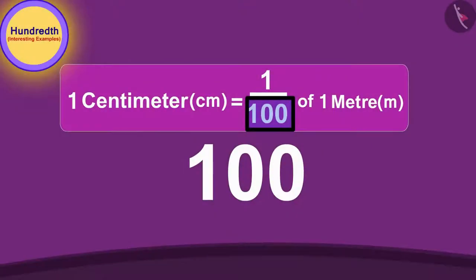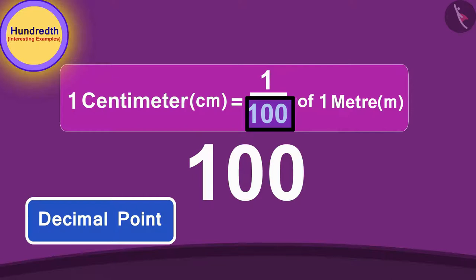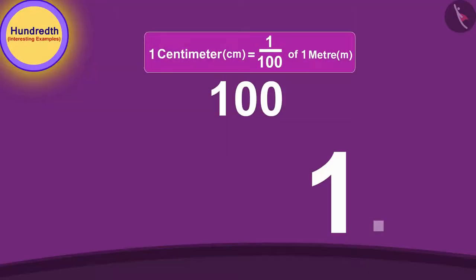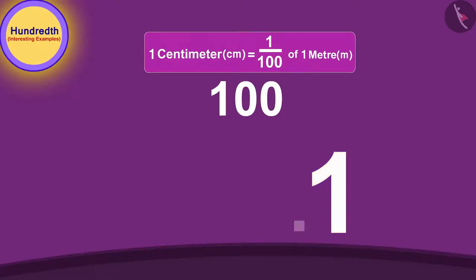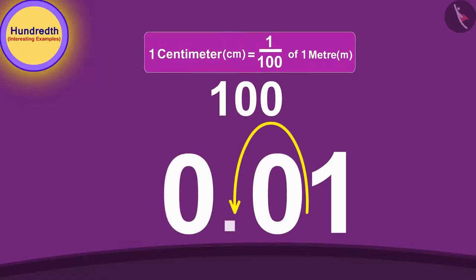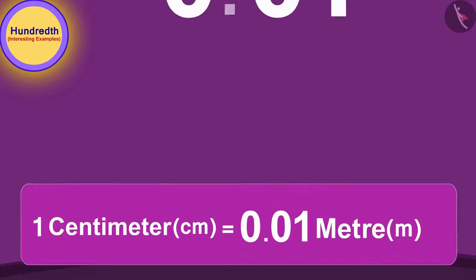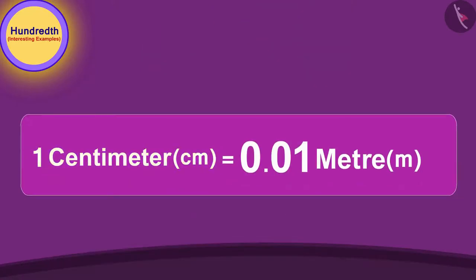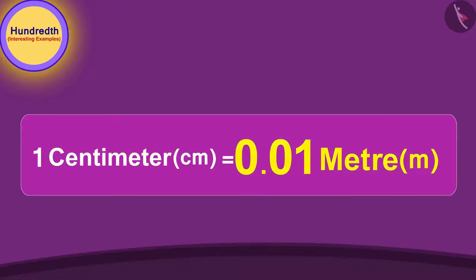We will move the decimal point twice to the left, starting from the end of the number, like this. And because this number only has one digit, we can add a zero on the left side. Then slide the decimal point to the left for the second time. In this way, 1 centimeter becomes 0.01 meter. Uncle explained to Chanda.